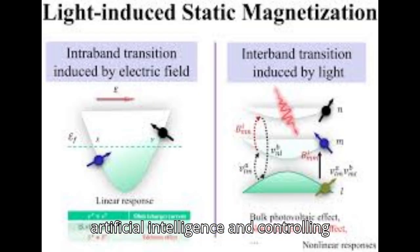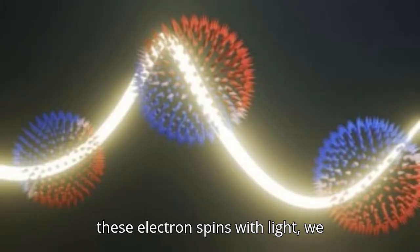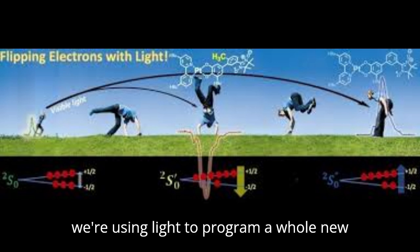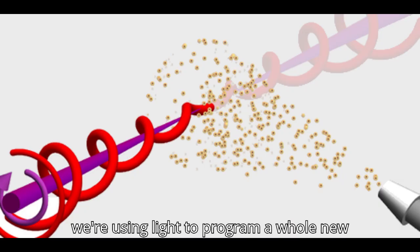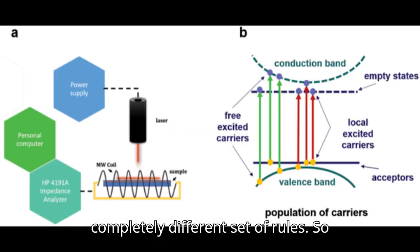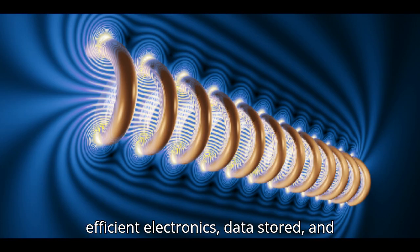It is a complex topic, but the key takeaway is that quantum computers are incredibly powerful machines that leverage the principles of quantum mechanics to solve problems that are impossible for our current computers to handle - things like developing new life-saving drugs, designing entirely new materials, even revolutionizing artificial intelligence. And controlling magnetism at the atomic level is crucial for actually building these quantum computers. By manipulating these electron spins with light, we can control the building blocks of quantum computers. It's like we're using light to program a whole new kind of computer that operates on a completely different set of rules.